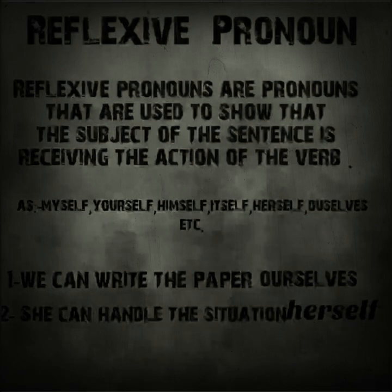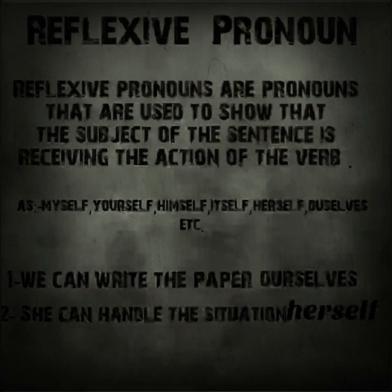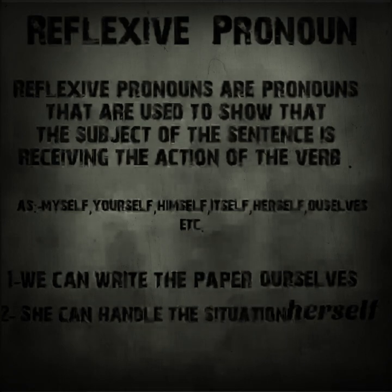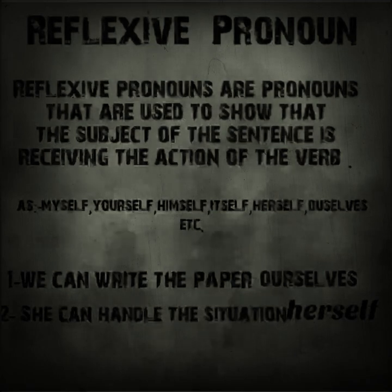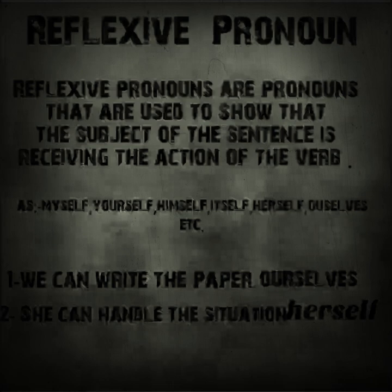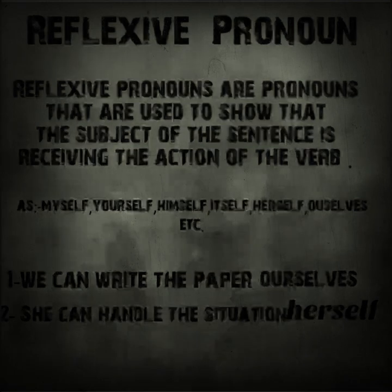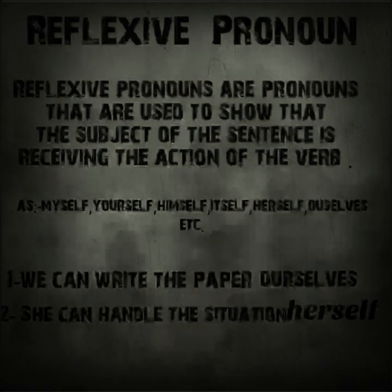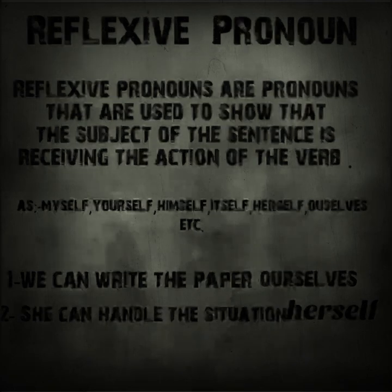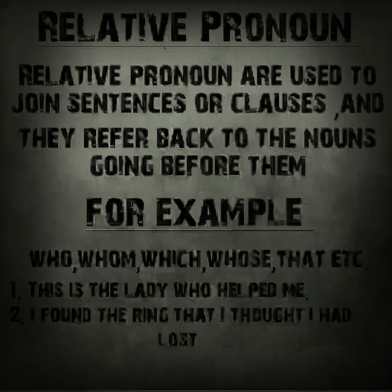The next type is reflexive pronoun. Reflexive pronouns are used to show that the subject of the sentence is receiving the action of the verb. For example: myself, yourself, himself, herself, etc. As in: 'We can write the papers ourselves.' Here, 'ourselves' is the reflection of 'we' — yahan woh kehna chahta hai ki hum paper apne aap likha karte hain.